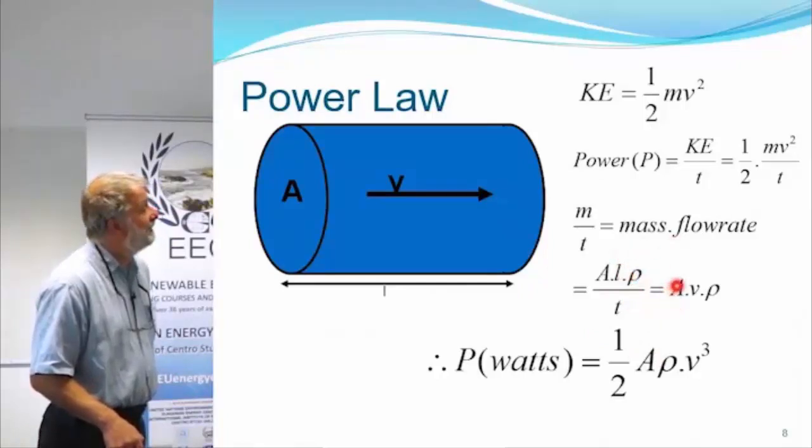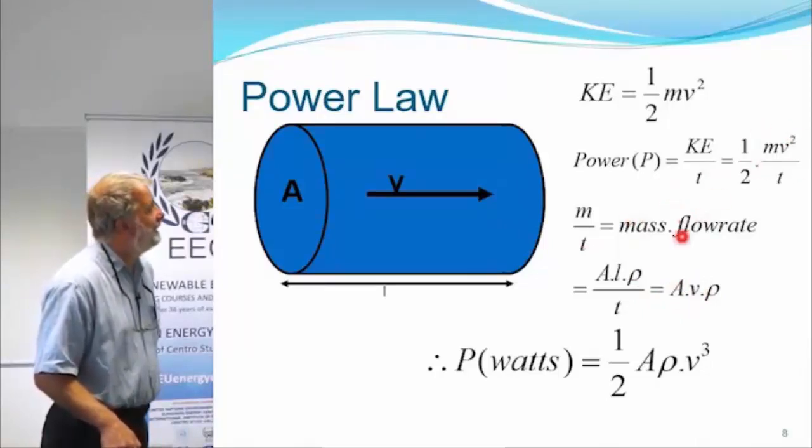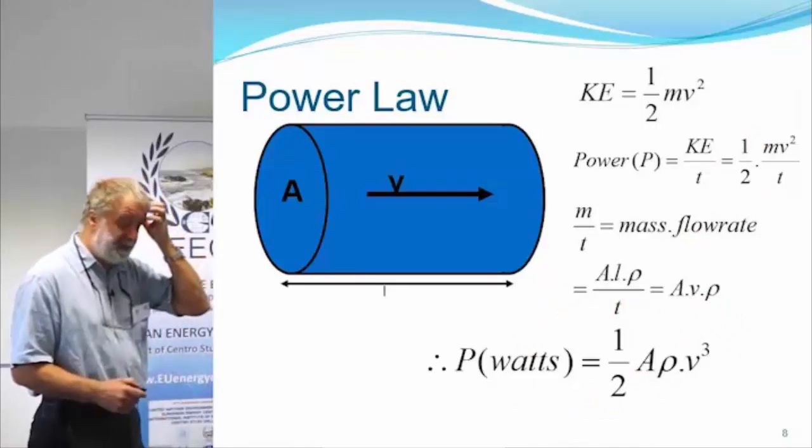So we'll now land up with A v rho and I put that expression back into our expression for power up here. Replacing m over t, we land up with this expression: Power equals half A rho v cubed.